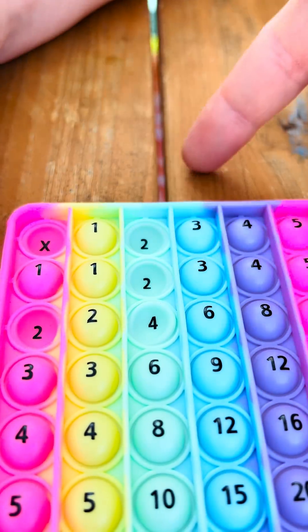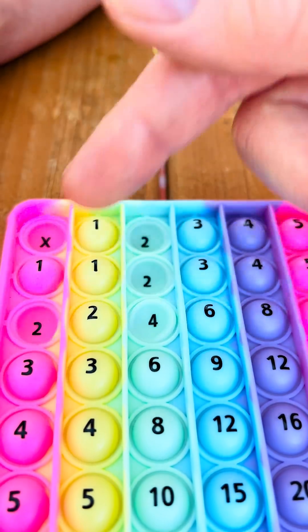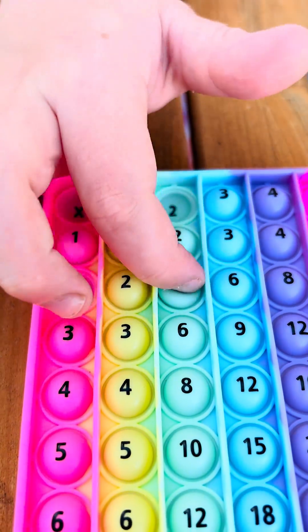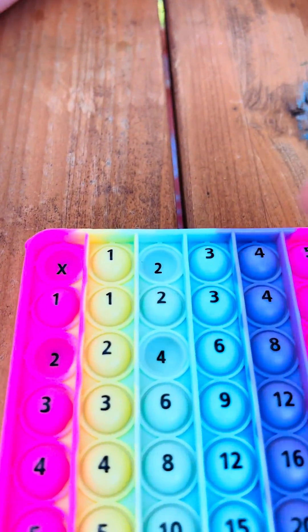So, 2 over and 2 down. 2 times 2 equals what? 4. So, what does that make?